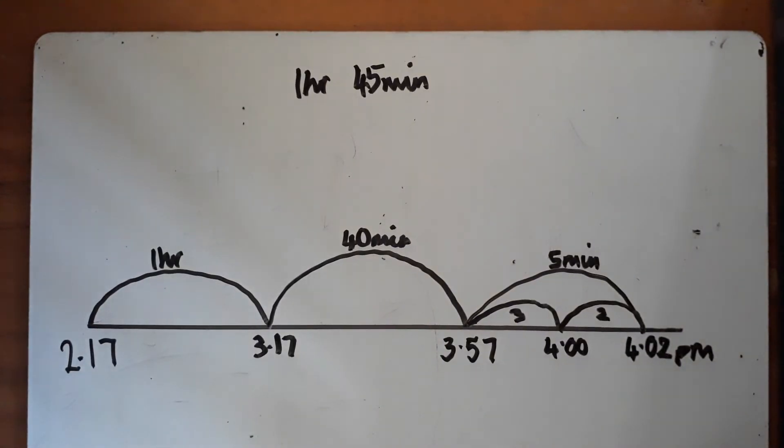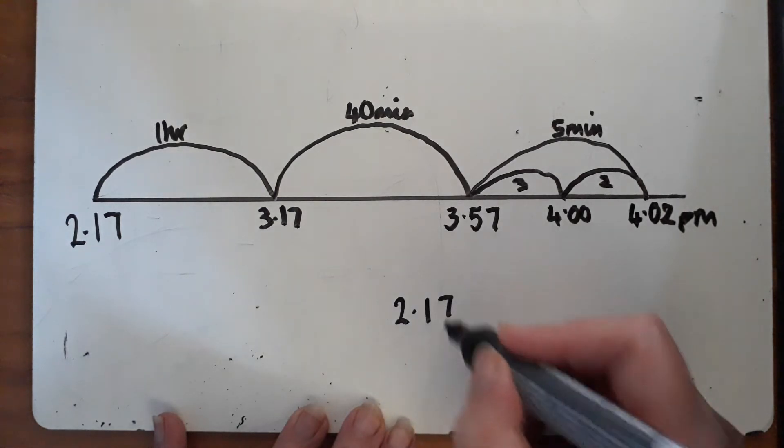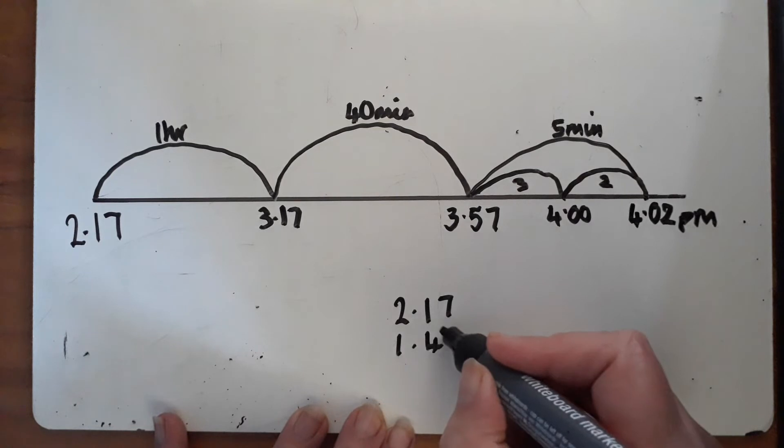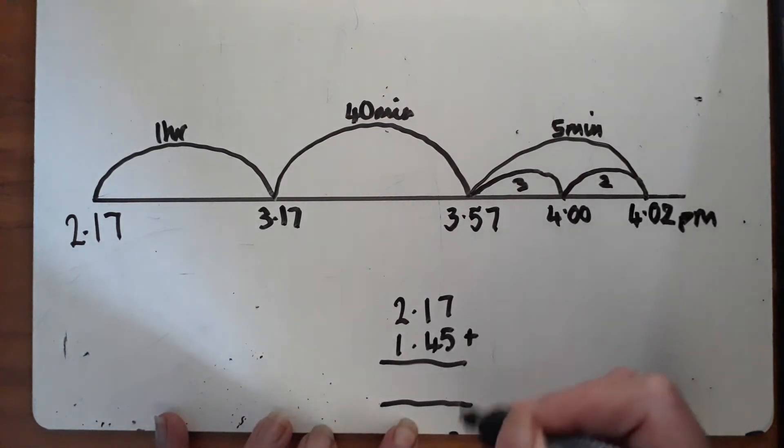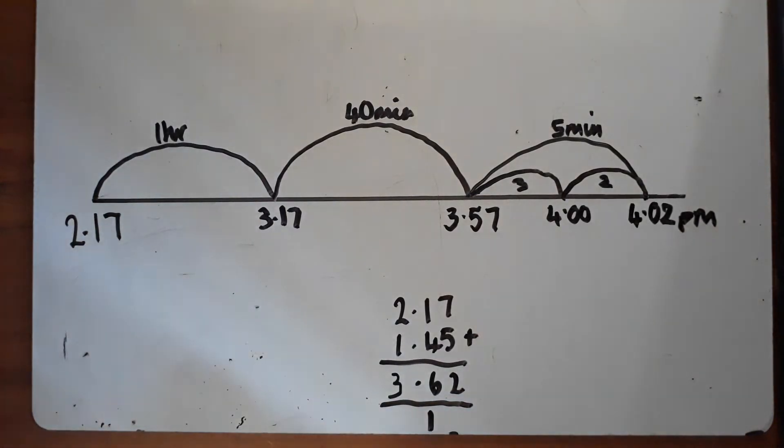Now let's look at why we can't use column addition to help us. We started at 2:17 PM and needed to add 1 hour 45. Using column addition: 7 and 5 is 12, so I put down the 2 and exchange the 1. In the tens, 1 add 4 is 5, plus 1 is 6. Then 2 and 1 is 3. So we get 3:62.